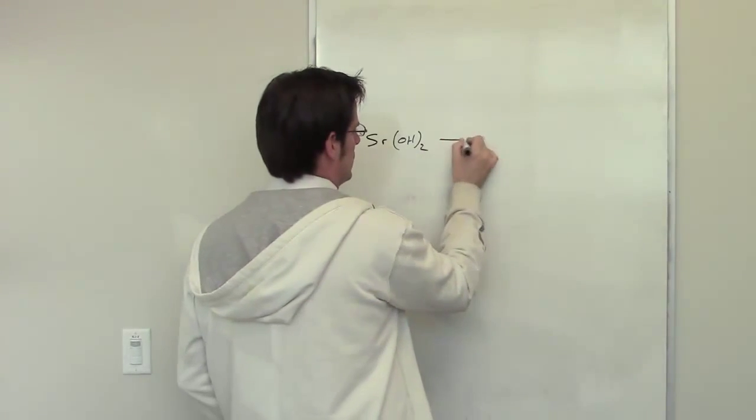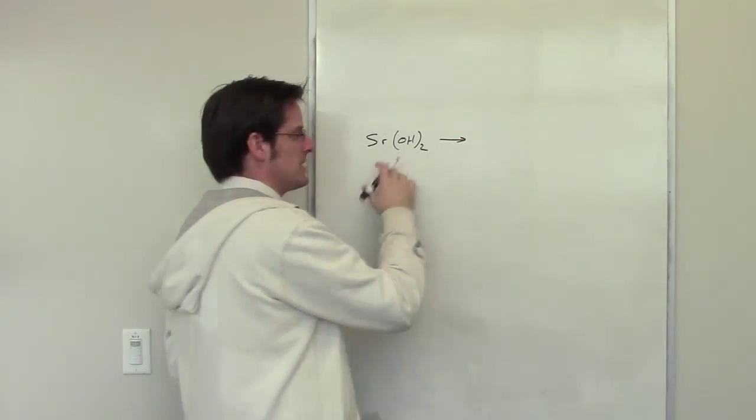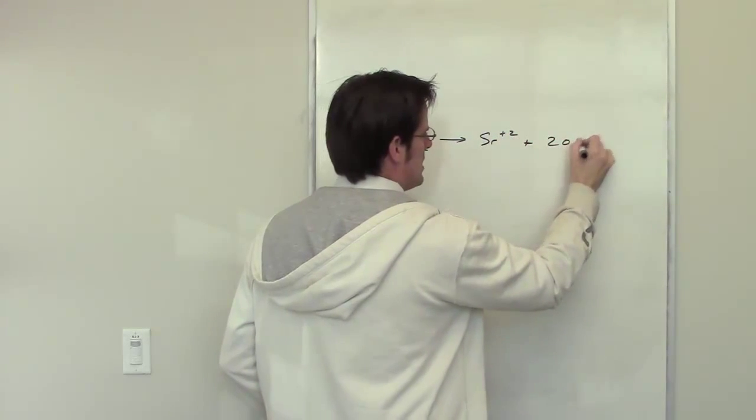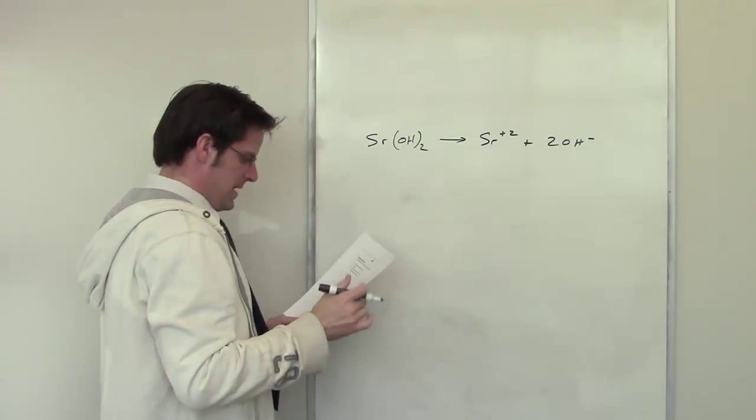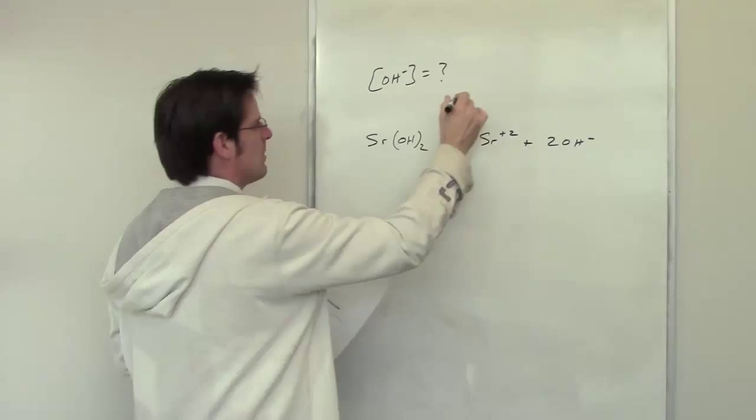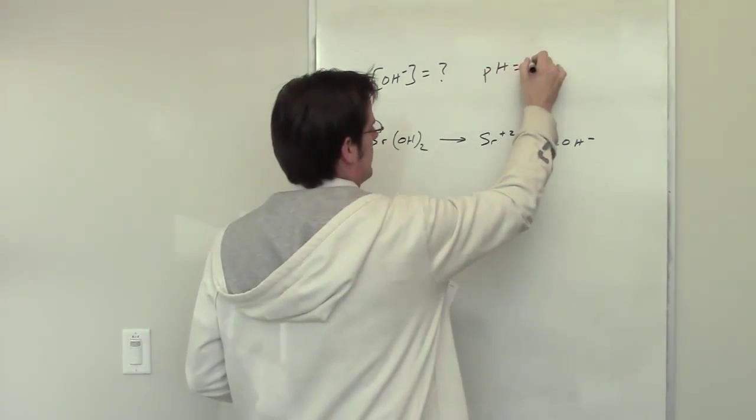Let's start. In aqueous solution, because it's a strong base, it will dissociate virtually 100% to give these products. It wants me now to calculate the hydroxide ion concentration and the pH for this system.